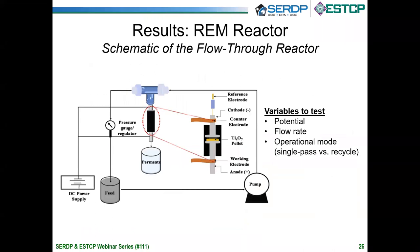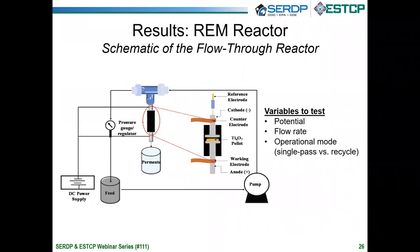These REMs are synthesized by reduction of non-conductive TiO2 to conductive Ti4O7. We fabricate both tubular and disk REMs. The REM flow-through reactor circulates a feed solution in an outer loop with a pressure gauge and regulator to control back pressure — higher back pressure produces more flux through the REM. The exploded view shows our Ti4O7 pellet as the anode, a stainless steel counter electrode, and a reference electrode placed near the pellet to monitor potential. We tested the effect of both potential and flow rate on PFAS removal, with two operational modes: single-pass and recycle mode.